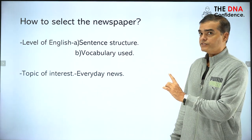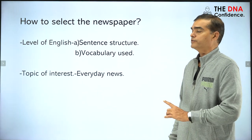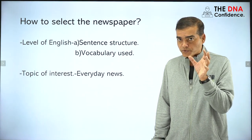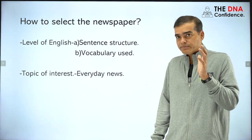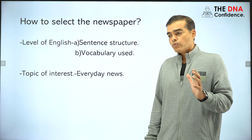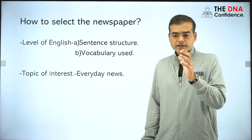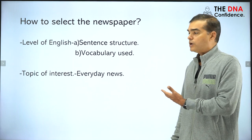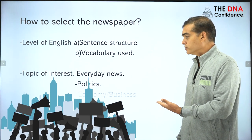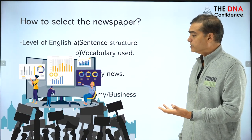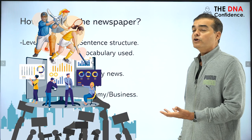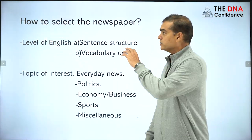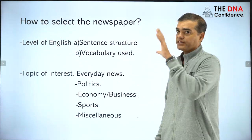The second criteria is topic of interest. You must have interest — a process-oriented approach requires genuine interest. What is your genre? What kind of news do you love — everyday news, politics, economics, business, sports, or general miscellaneous news? Based on these two criteria, you have to select the right newspaper.